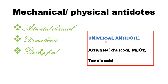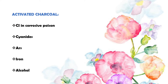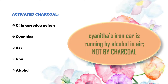Next, universal antidote. The composition of the universal antidote is activated charcoal, magnesium oxide, and tannic acid. Activated charcoal is used in many poisons, but there are some exceptions which are always important, so please be careful.